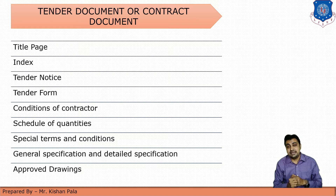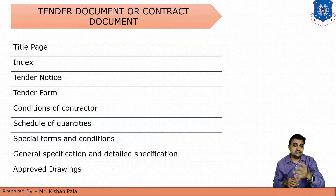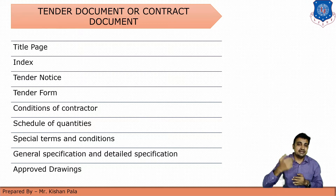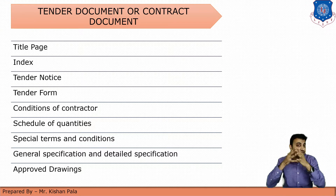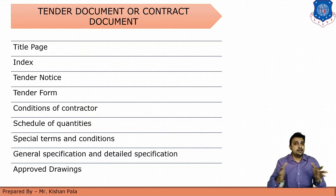Next are general specifications and detail specifications. For example, if concreting work is mentioned and that work requires a particular special type of concrete — for example, self-compacting concrete — then the special conditions, specifications, terms and conditions should be mentioned in the tender document, along with approved drawings.